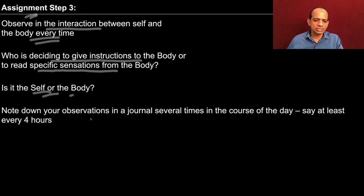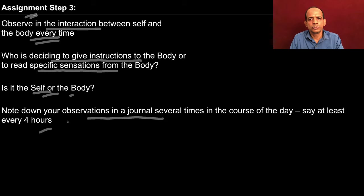You can note down your observations in a journal several times in the course of the day, at least every four hours. For this whole week you can practice steps 1, 2, and 3, and next week we will practice step 4. In today's session we observed the decision maker and found that it is the self who decides every time — the self is the seer, the doer, and the enjoyer, while the body is merely an instrument. Practice this for the whole week and we will discuss step 4 in the next session. Thank you.